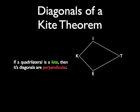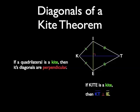Now we have our first theorem about kites and actually our only theorem about kites. We call it the diagonals of a kite theorem. It says that if a quadrilateral is a kite, then its diagonals are perpendicular. So if KITE is a kite, which we can tell by the markings it is, then segment KT is perpendicular to segment IE. Namely, their diagonals are perpendicular.